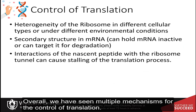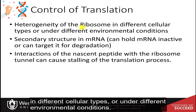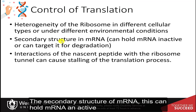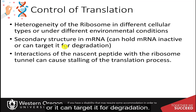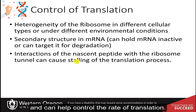Overall, we have seen multiple mechanisms for the control of translation. These include the heterogeneity of the ribosomes in different cellular types or under different environmental conditions, the secondary structure of messenger RNA which can hold it inactive or target it for degradation, and interactions of the nascent peptide with the ribosome tunnel which can cause stalling and help control the rate of translation.